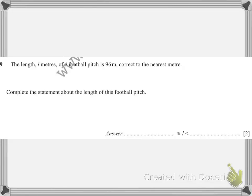For this question, the length of a football pitch is 96 meters, correct to the nearest meter. Complete the statement about the length of this football pitch. We always write the lower bound here and the upper bound here.